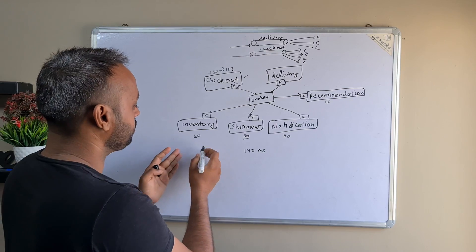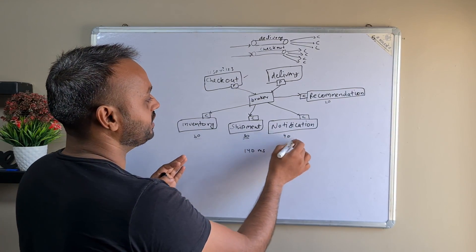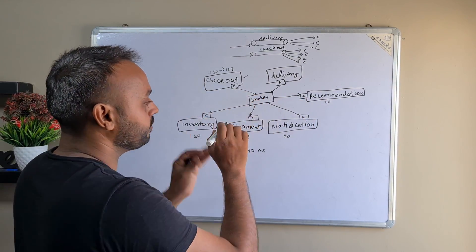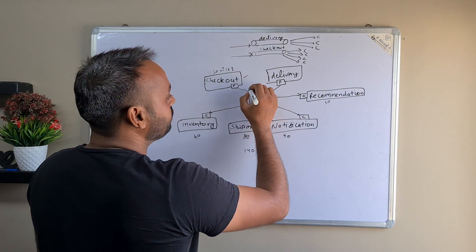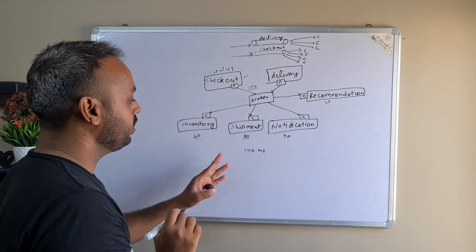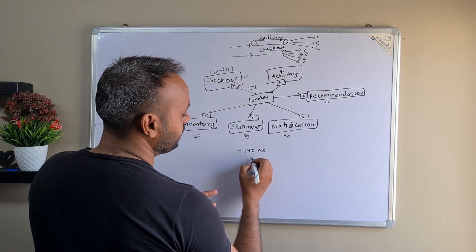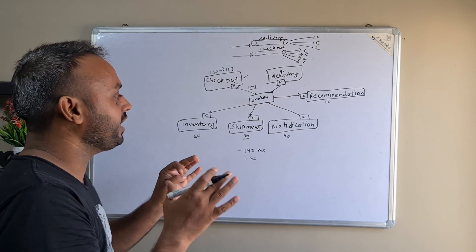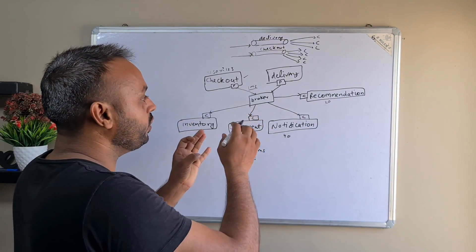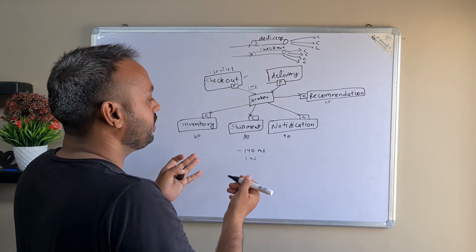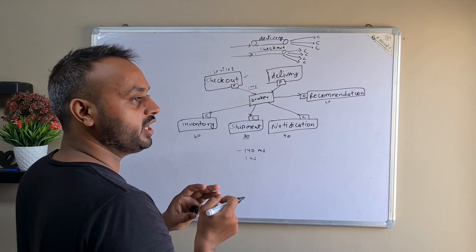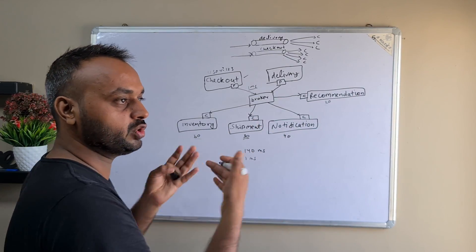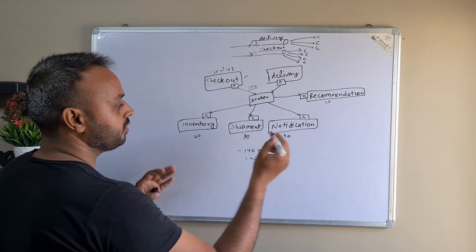What we have achieved here is we basically decoupled the producer and the consumer. Earlier, these APIs were adding latencies from each service — 140 milliseconds total. Now, pushing this event to the broker merely takes one millisecond. It can be slightly more depending on where your broker is situated and the network latency, but it is typically very very low. Also, we don't need to integrate these services directly. Just push the event into the broker and write a consumer for that topic in each service.